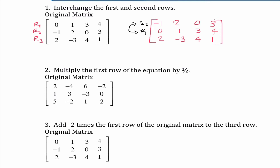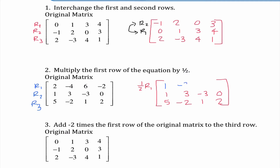Number 2 says multiply the first row by 1/2. R sub 2 and R sub 3 stay exactly the same. I distribute 1/2 to each term in row 1: 1/2 times 2 is 1, 1/2 times negative 4 is negative 2, 1/2 times 6 is 3, and 1/2 times negative 2 is negative 1.